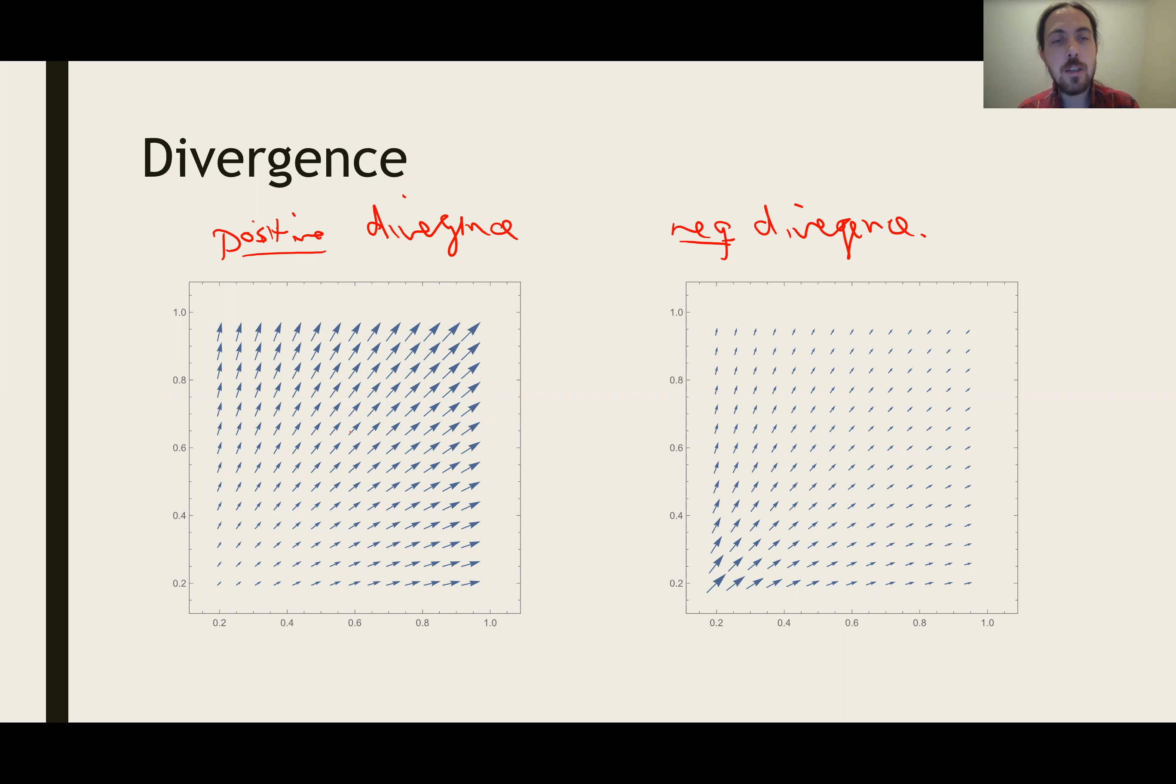So you have to imagine like maybe this is a crowd of people all running away from a Walmart or something like that. And if you're at this particular position, you want to know whether people are crowding in towards you or whether you're kind of gradually getting more and more space.